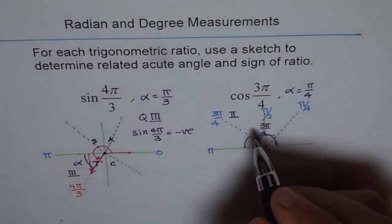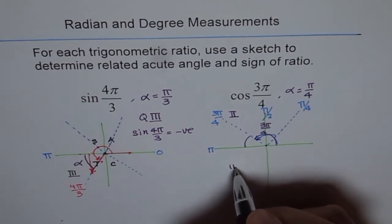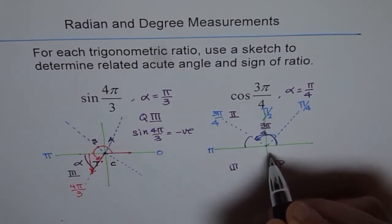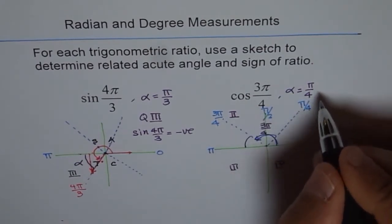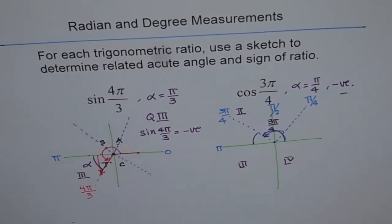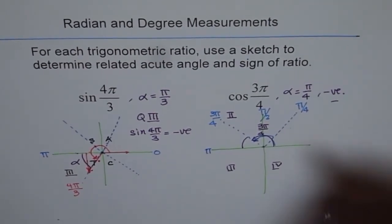And for cos, you know the cos rule. Cos is positive in quadrant 4 and in quadrant 1. So cos is negative here. It's in quadrant 2 and it is negative. So that's what it is.